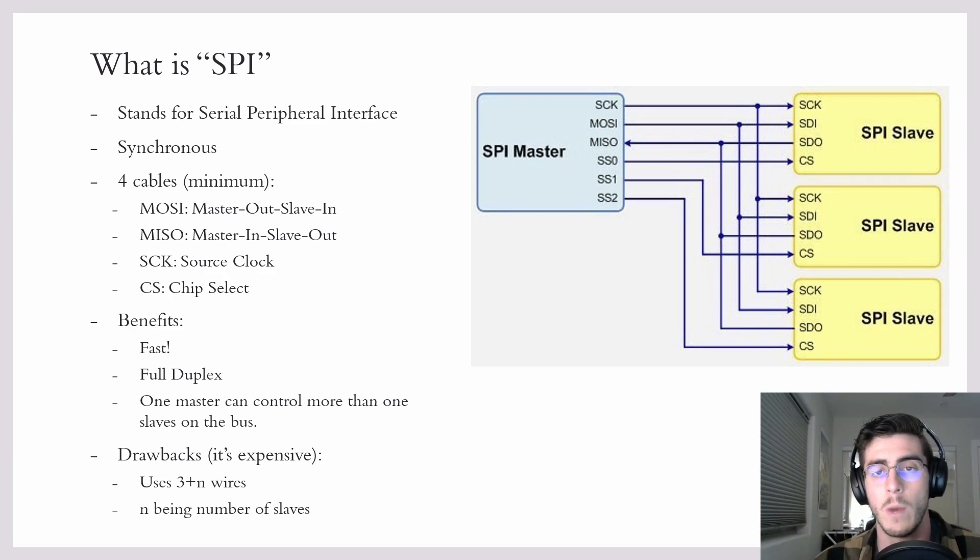Full duplex is a fancy way of saying that there's bi-directional communication at the same time. Another benefit is one master can control more than one slave, and the way it does that is through this chip select cable.